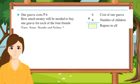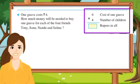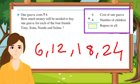Next example. 1 guava costs rupees 6. How much money will be needed to buy 1 guava for each of the 4 friends Tony, Sonu, Nandu, and Salma? One guava's cost is 6 rupees. For these four children, to give each one guava, how many rupees are needed? Let's multiply. 6, cost of 1 guava, multiply by 4, number of children. 6 multiplied by 4 is equal to 24. Total is 24 rupees in all.